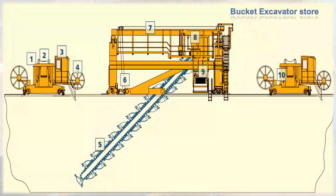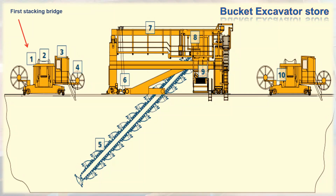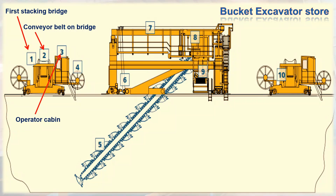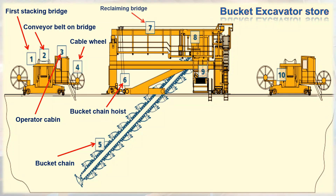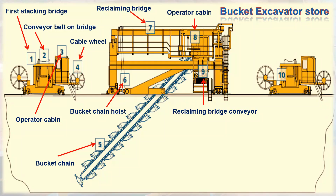The bucket excavator store consists of: first stacking bridge, conveyor belt on bridge, operator cabin, cable wheel, bucket chain, bucket chain hoist, reclaiming bridge, operator cabin, reclaiming bridge conveyor, and second stacking bridge.